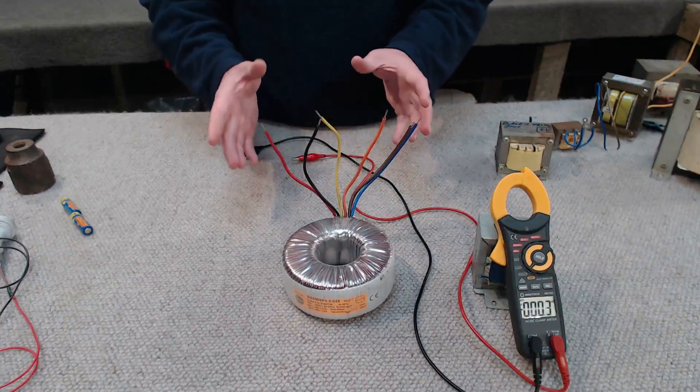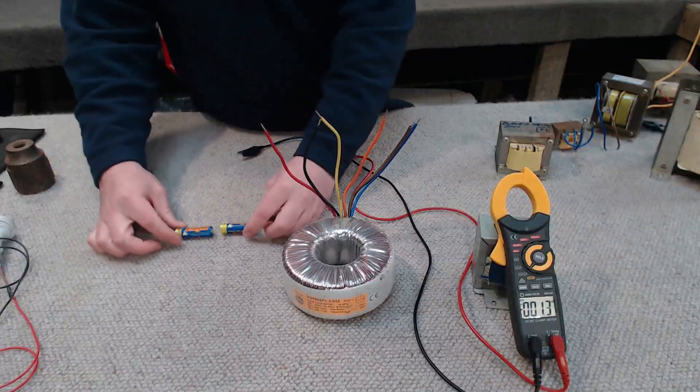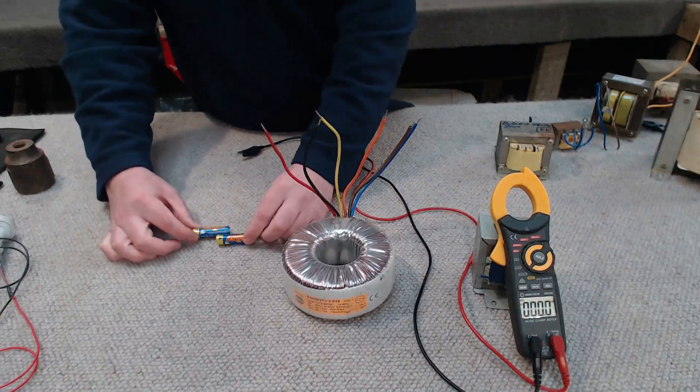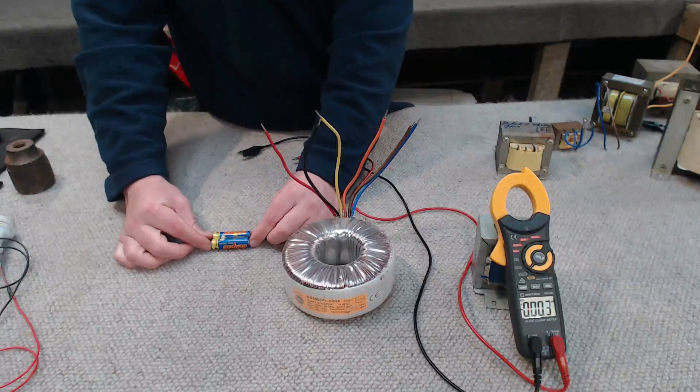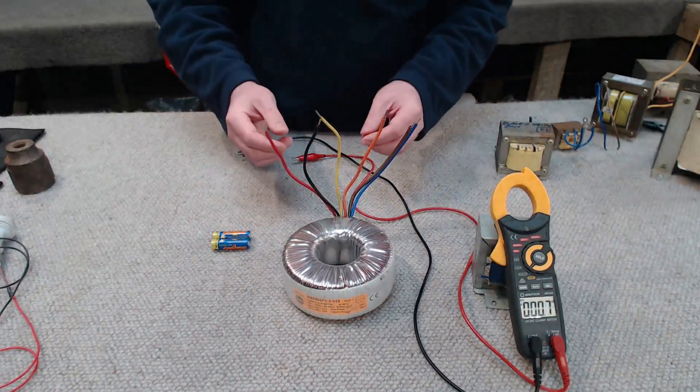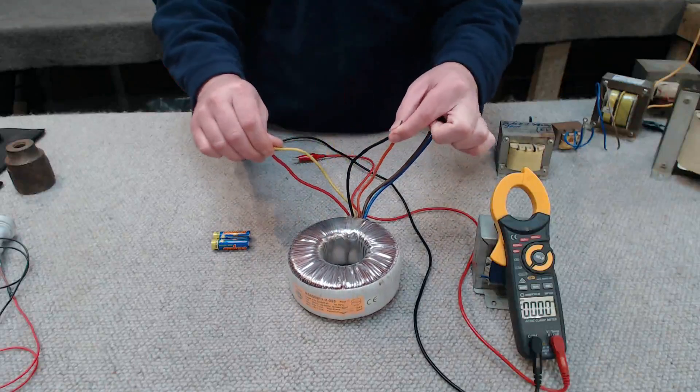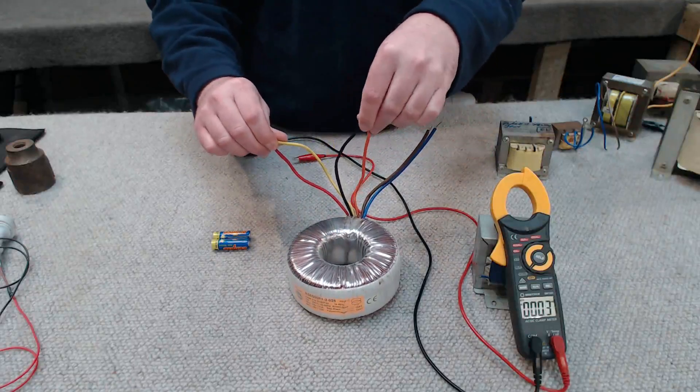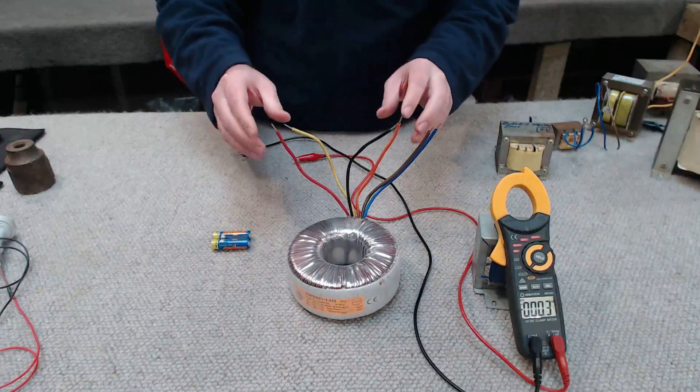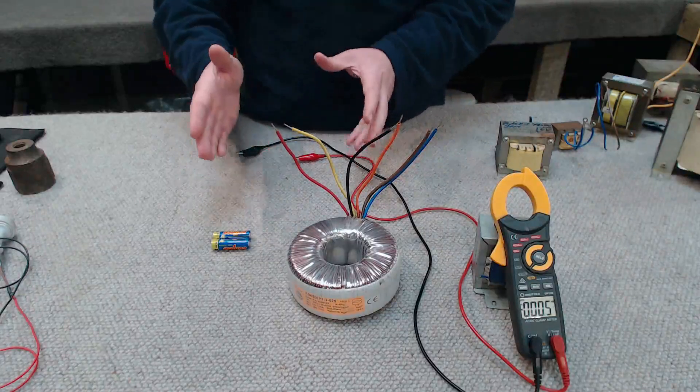There is another way we could configure the secondaries though. We could put them in parallel. So parallel, rather than connecting, if we go back to our batteries, positive to negative, we're going to connect both positives together and both negatives together. So this will not increase the voltage, but it will increase the current. And you'd wire it something like this. We've got orange and black and yellow and red. And this would now be in a parallel configuration where we get 25 volts, but we now get it at 20 amps of current.